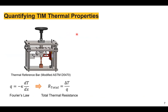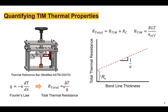TIMs are typically quantified using a steady-state thermal reference bar method, common in industry. The working principle is Fourier's law of heat conduction, measuring total thermal resistance of the sample material — the temperature gradient over a constant heat flux. This resistance can be broken down into the resistance of the TIM itself and the contact resistance. If the bond line thickness is known, an effective thermal conductivity can be expressed. There is a linear correlation between thermal resistance, bond line thickness, and contact resistance magnitude.